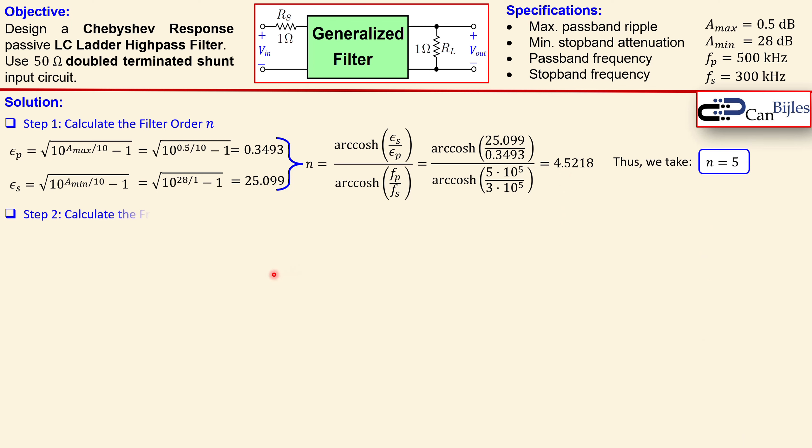The next step, step two, is the calculation of the frequency scaling factor kf. That's actually just setting this kf to omega p which is 2π times this fp. So it's just setting this kf to that value which is 2π times 500 kilohertz, so it's then 10^6 π radians per second. So this is just the value we will use later.